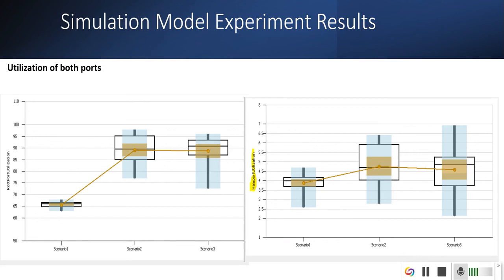The utilization of both ports. For Rotterdam port utilization, as you can see for scenario one, it is very low which is around 65%, and for scenario two and three, it's close to 90% which is very good. On the other hand, the Hamburg port utilization is very lower than the Rotterdam port. It is close to around 4 to 5% utilization, which is very low. The reason is that it has a lot of uneven demand distribution between the ports.